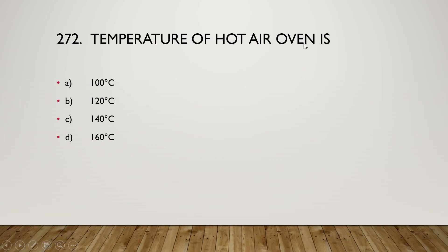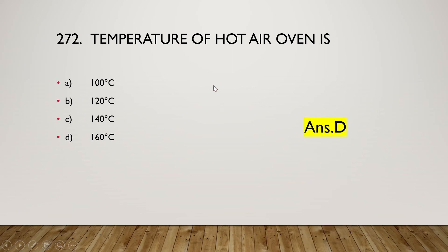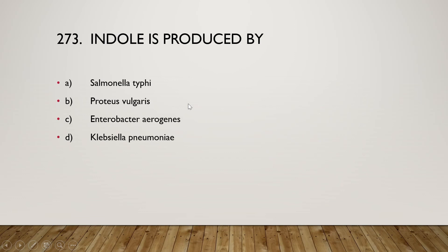The temperature of a hot air oven is 100°C, 120°C, 140°C, or 160°C? The right answer is option D, 160°C.